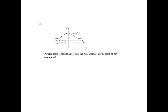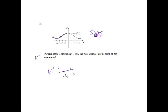Problem 18. The graph above is the graph of f prime. For what values of x is the graph of f concave up? Concavity has to do with f double prime. Since we're at f prime and want f double prime, I look at the slopes of the curve to make an f double prime chart. The slopes are negative until negative 4, positive all the way until 0, then negative until 3, and after 4 my slopes turn positive again.